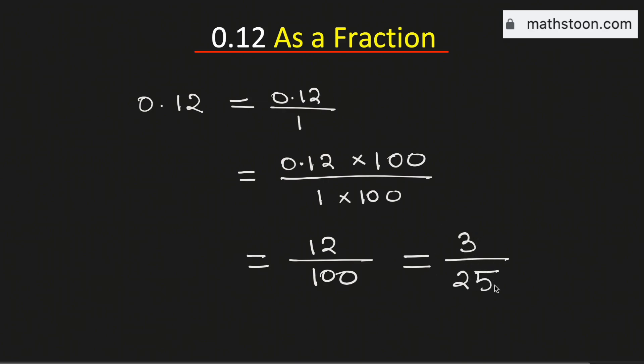And now 3 over 25 is simplified. So 0.12 as a fraction is the same as 3 over 25, and this is our final answer.